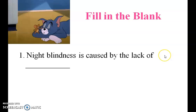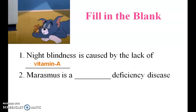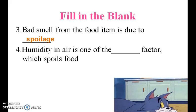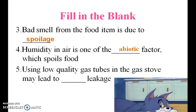Night blindness is caused by the lack of vitamin A. Marasmus is a protein deficiency disease. Bad smell from the food item is due to spoilage. Humidity in air is one of the abiotic factors which spoils food. Using low quality gas tubes in the gas stove may lead to gas leakage.